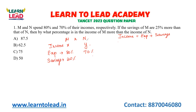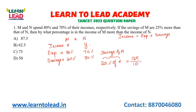We will discuss the income numbers. The savings of M is 25% more than that of N. So we set up: 20% of X equals 125 by 100 into 30% of Y. N's savings is 30%, and M's is 125% of that.